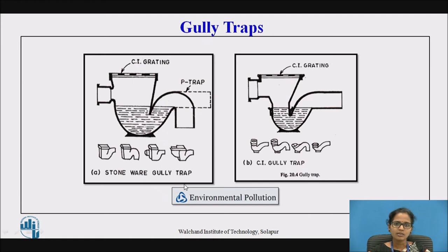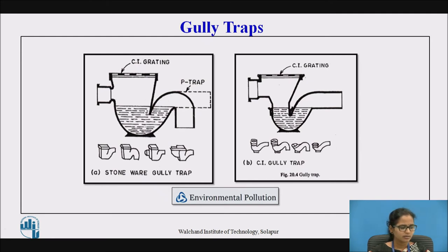The gully trap is provided at a junction of a roof drain and any other drain from the kitchen or bathrooms. The CI tower grating — the top of this gully trap is made up of CI grating. They are mostly made up of stoneware or CI (cast iron). They are mostly used on upper floors rather than ground floors. The depth of the water seal is 60 to 70 mm, and they are mostly installed inside masonry chambers.